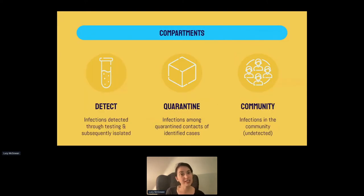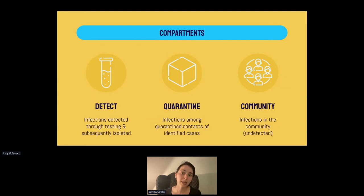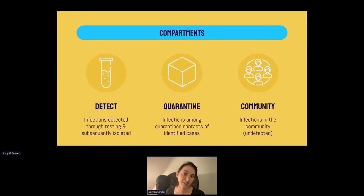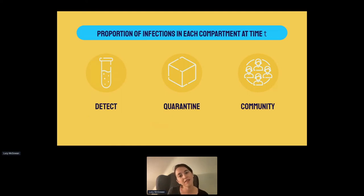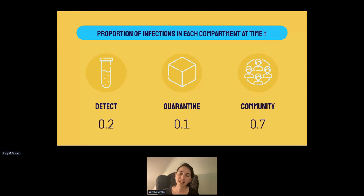For our model, we've designed compartments that infected individuals could fall into. They could be detected — infected individuals detected through testing and subsequently isolated. Or they could be in quarantine at the time of infectiousness — someone previously contact-traced and put into quarantine who then became infectious. Those are infections among quarantined contacts of identified cases. Finally, the last compartment is just infections in the community — undetected infections. For example, 20% of infected individuals are detected through testing, 10% are already in quarantine at time of infectiousness, and 70% go undetected.